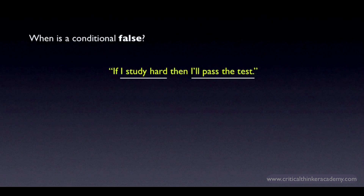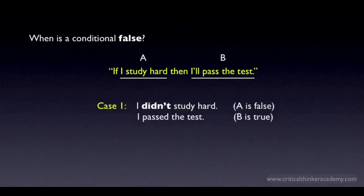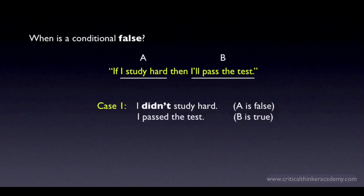In a minute, we'll look at the truth table for the conditional, which gives you the truth value of the conditional for every possible combination of truth values of A and B. The easiest way to understand the truth table is to think about the case where we would judge a conditional to be false. Here's one: if I study hard, then I'll pass the test. Under what conditions would we say this conditional claim is false? Let's consider some possibilities. Let's say I didn't study hard, but I still passed the test — the antecedent is false, the consequent is true. In this case, would the conditional have been false? No. The conditional could still be true. It doesn't say that the only way I'll pass is if I study hard. So my failing to study hard and still passing doesn't falsify the conditional — this combination of truth values does not make the conditional false.